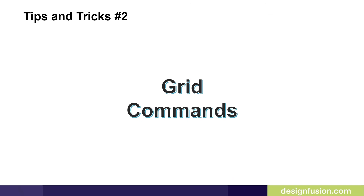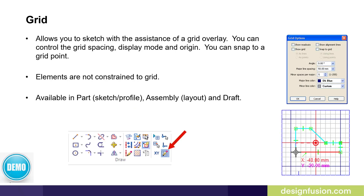The next tip covers the grid commands. Some users may not be aware that Solid Edge has a grid capability. This allows you to sketch with the assistance of a grid overlay — you can control the grid spacing, display mode, and origin, and snap to grid points. Elements are not constrained to the grid; it just allows you to position things. This is really good for layout and is available in the Part, Sketch, Profile, and Assembly Layout environments, as well as the Draft environment.